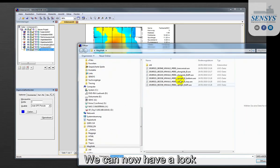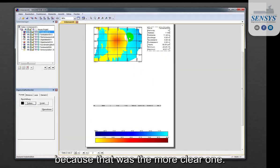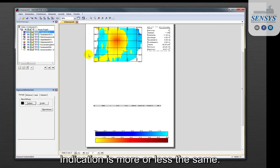We can now have a look to the alongside front sensor because that was the more clear one. So here, so communication is more or less the same.